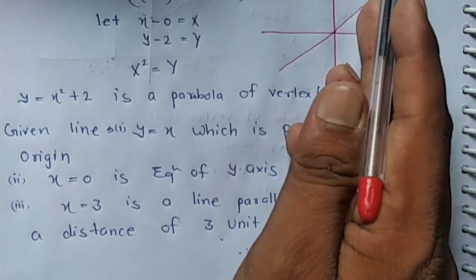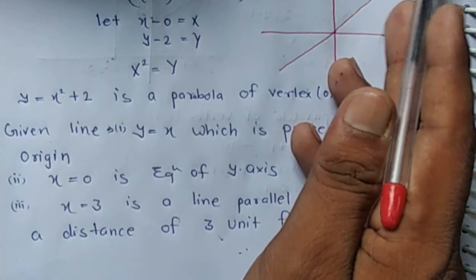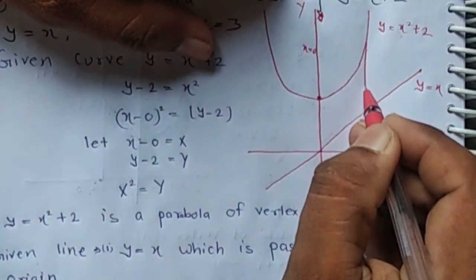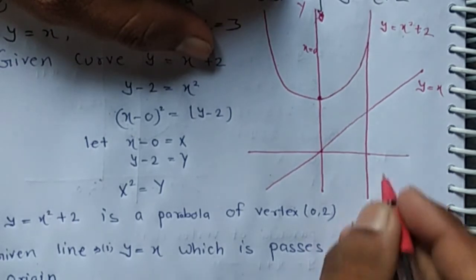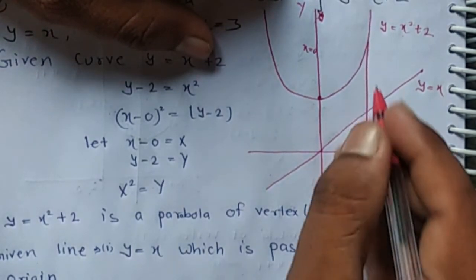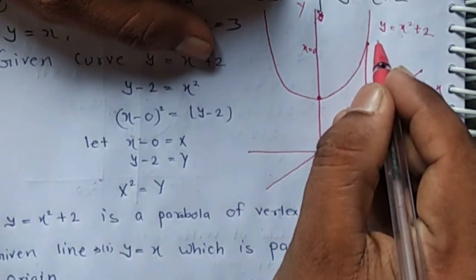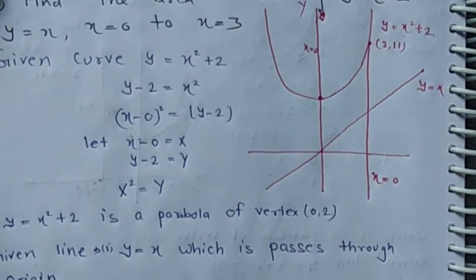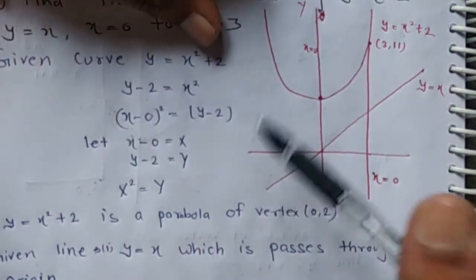We get 3 squared plus 2, which means y equals 11. So x equals 3 cuts this parabola at 3 comma 11, and we have to find the bounded region.